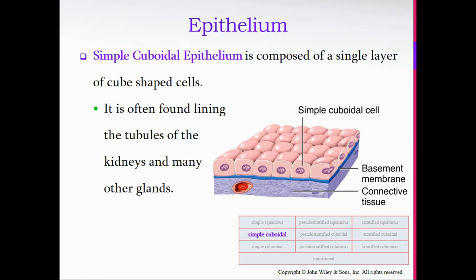Simple cuboidal consists of one layer of cube-shaped cells. We find them lining the tubules of the kidney and also in many other glands — such as the adrenal gland and the hypothalamus — and so on. That is where you will find areas of simple cuboidal epithelial tissue.